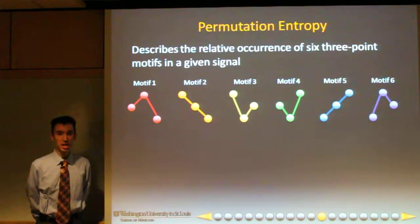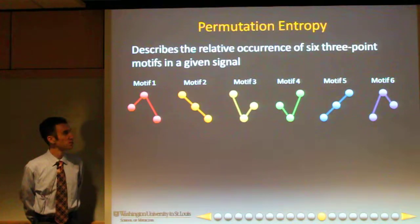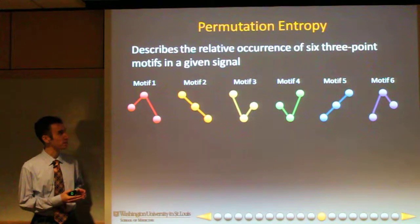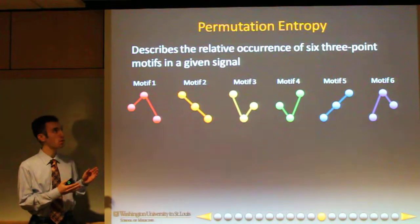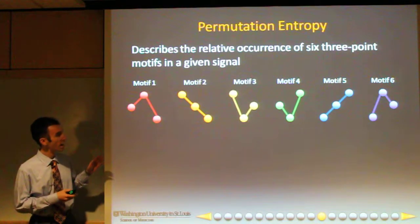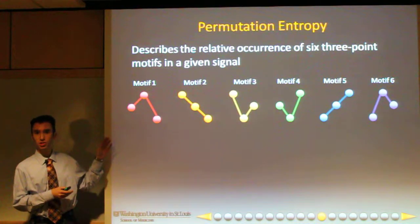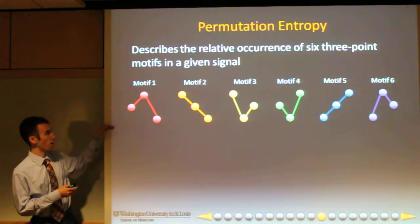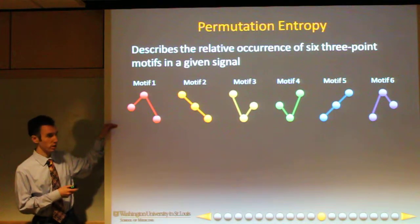Now we will discuss permutation entropy. This describes the relative occurrences of six three-point motifs in a given signal. These motifs are defined by the relative order of the three data points that we have.